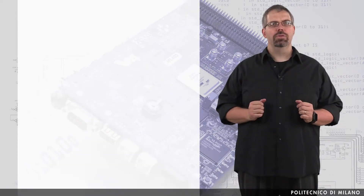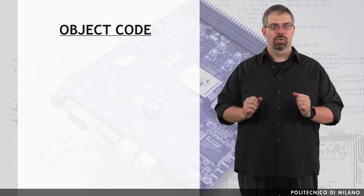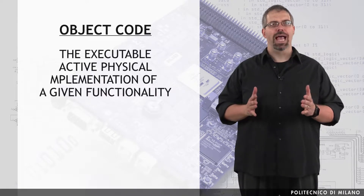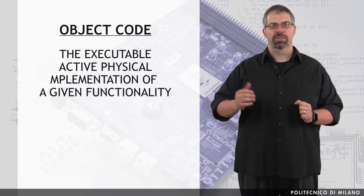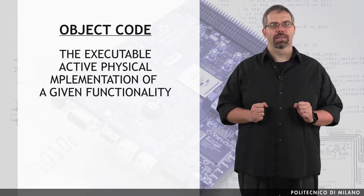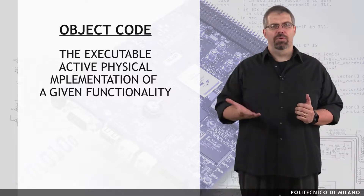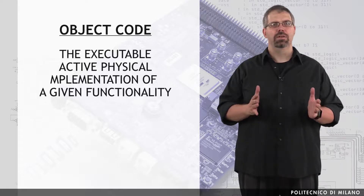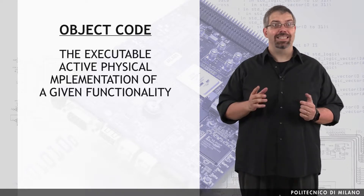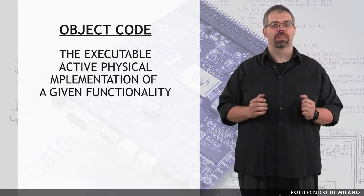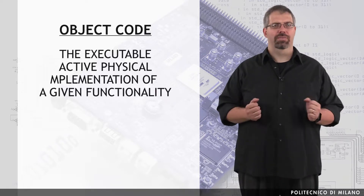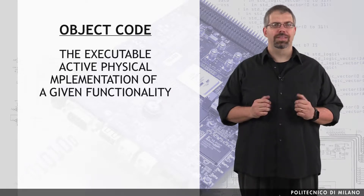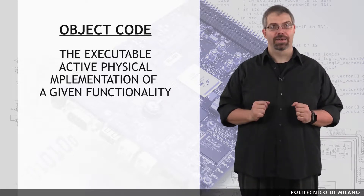First of all, I am going to introduce you the term object code. With object code I am going to refer to the executable active physical implementation, either hardware or software, of a given functionality. Think of an executable file in the software context — this file is nothing more than a sequence of zeros and ones, as it is a bitstream file used to configure a certain system or just a functionality on an FPGA. The object code is something more; it can be seen as a bitstream under execution.